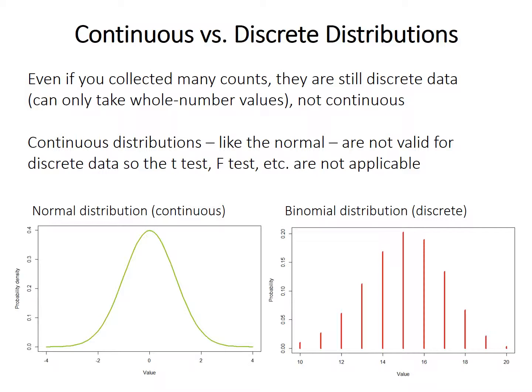There are actually different statistical probability distributions for discrete data, like the binomial distribution shown here, which you'll learn about in the upcoming videos.